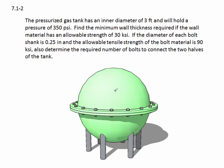We are given the pressure of the tank and the allowable strength of the material so we can find wall thickness. And then we need to use the information given about the bolts to find out how many of these bolts will be required to connect the two ends together.